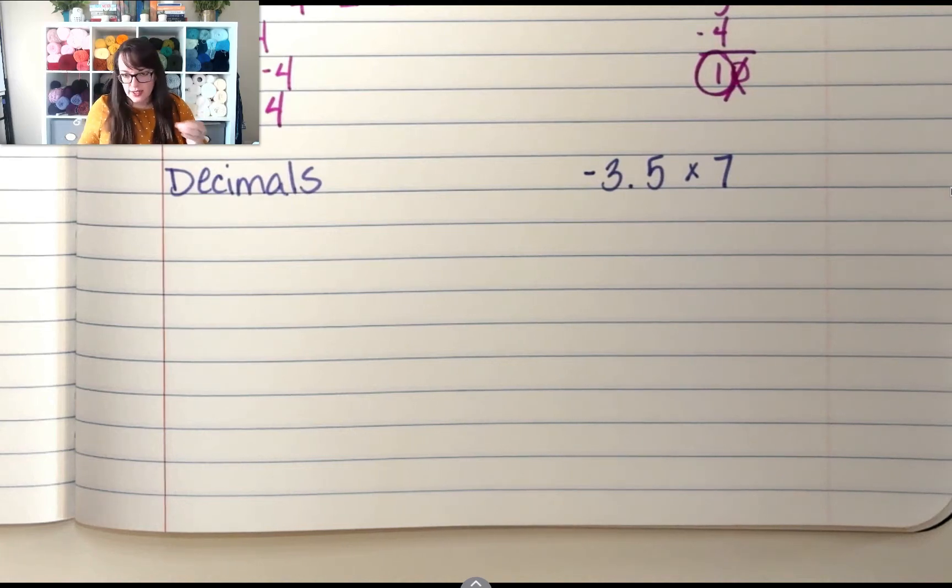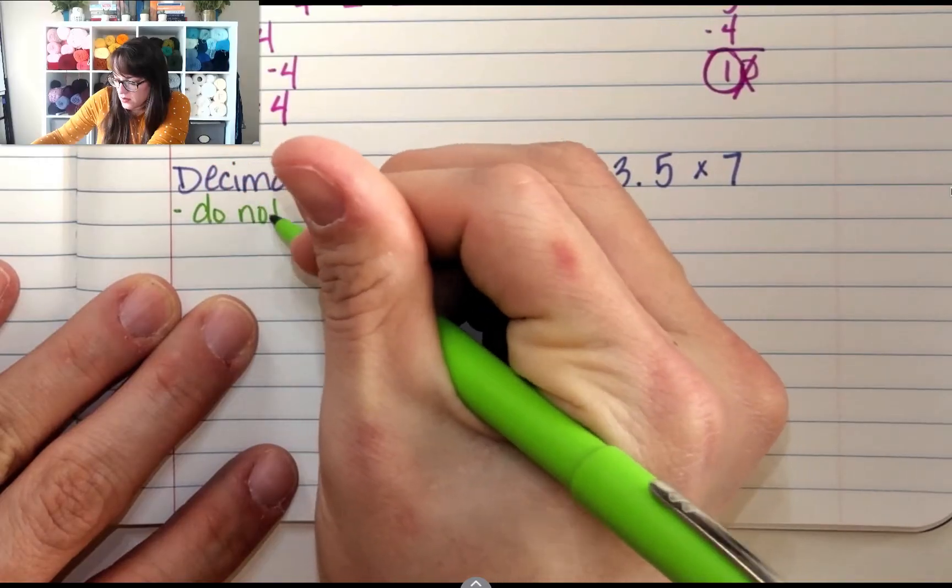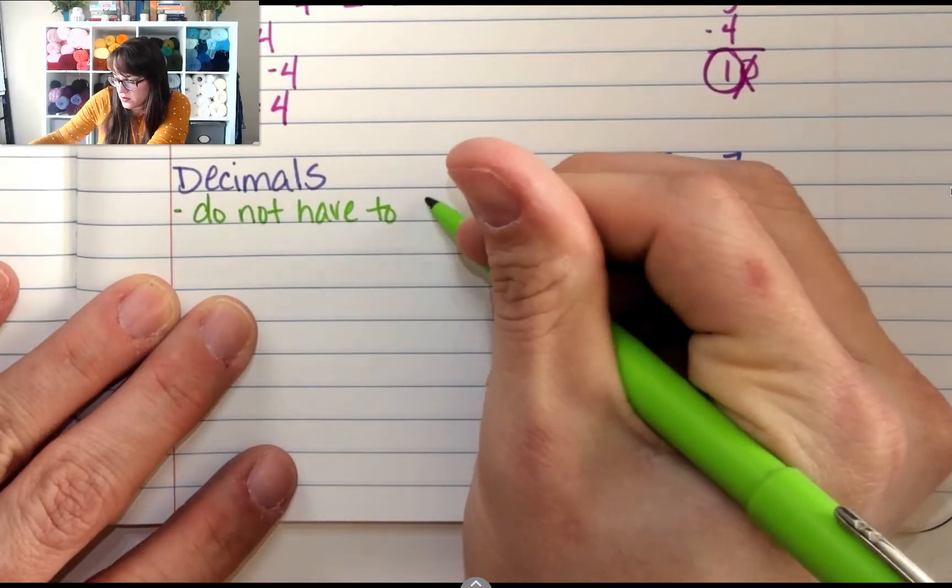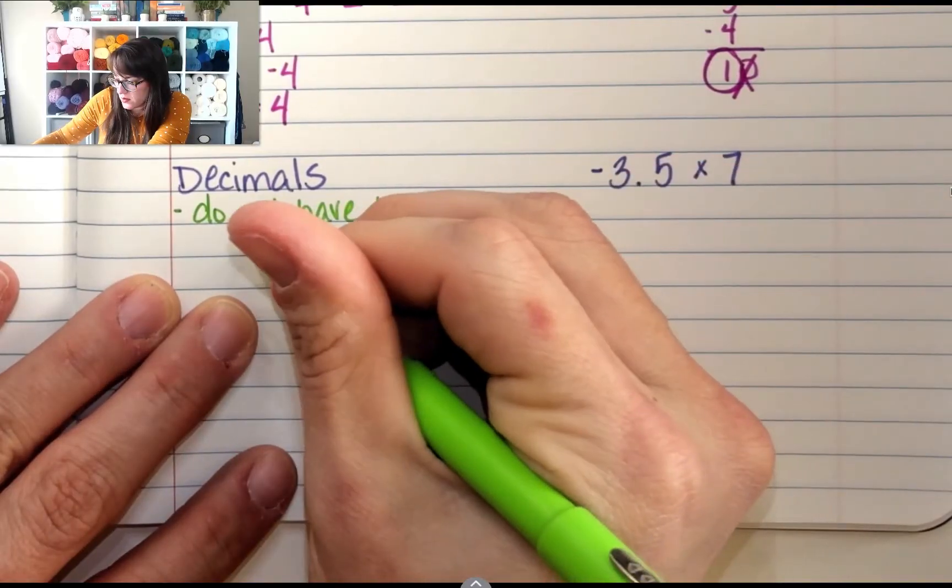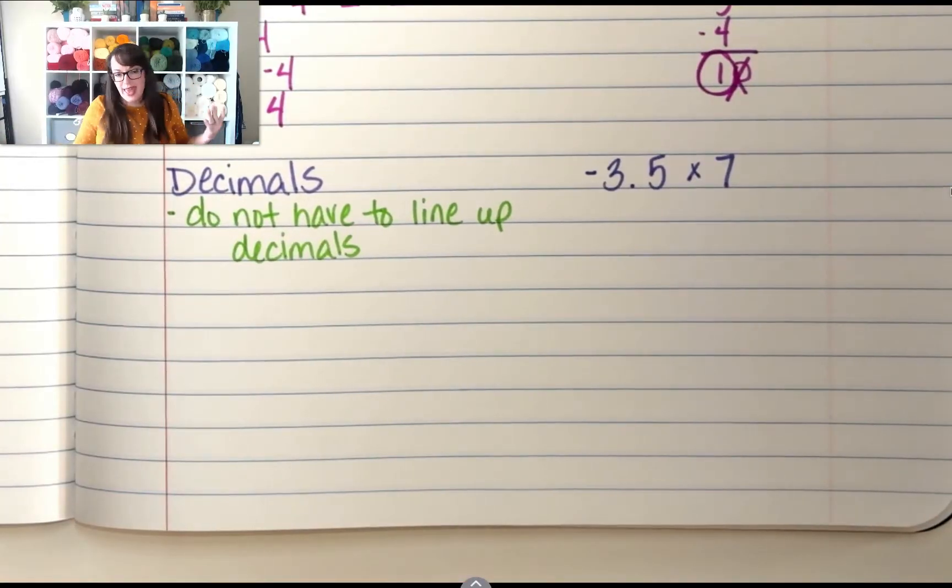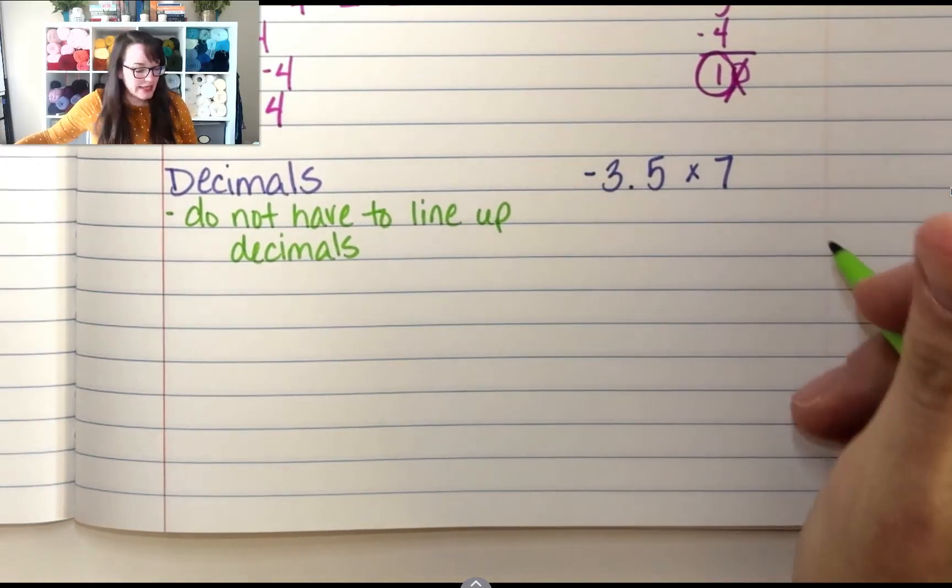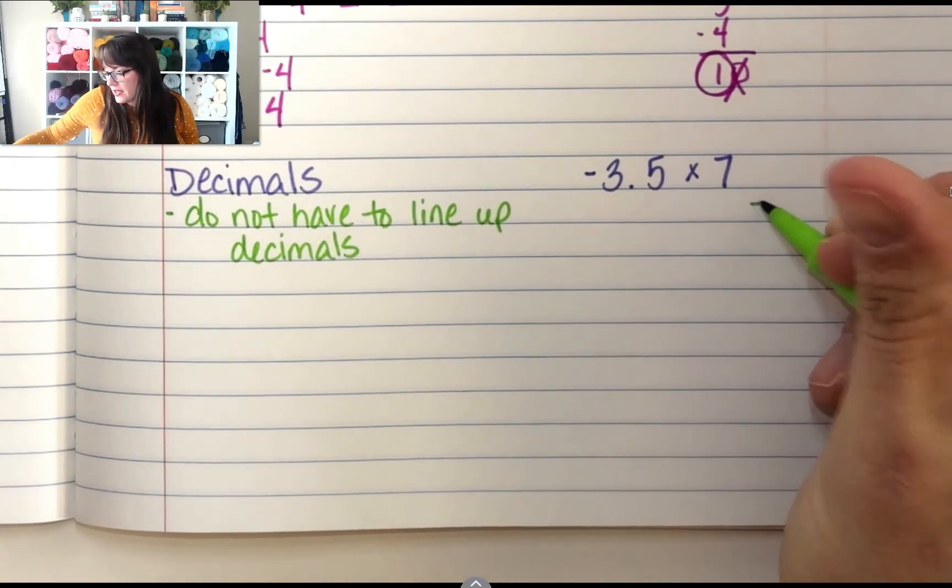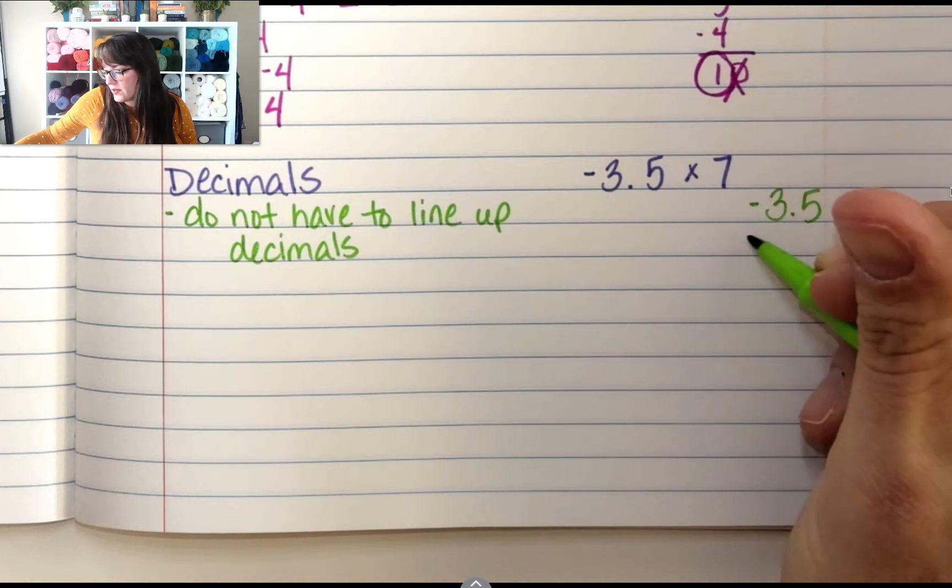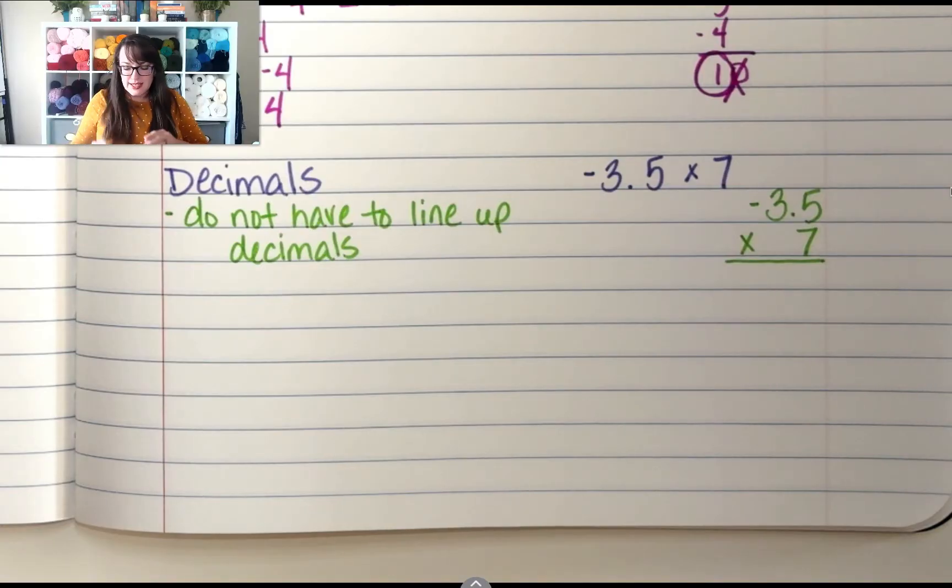We do not have to line up the decimals. Can you? Sure. Why not? You can. Do you have to? Absolutely not. If you do line up the decimals, it actually makes more work, so it might be easier if you don't line them up. So I'm going to be negative 3.5 times 7. Now, I'm going to multiply this like it says 35 times 7. So what is 35 times 7?